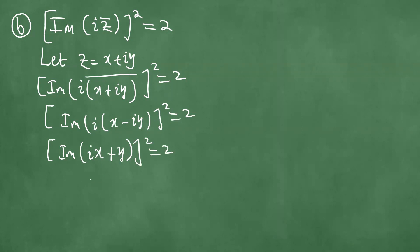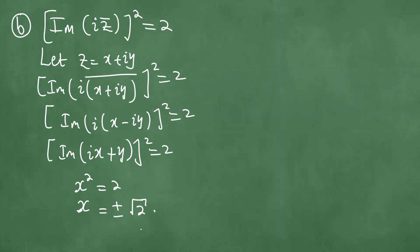We take the imaginary part of this complex number. The imaginary part is x, so x squared equals 2. Therefore x equals plus or minus the square root of 2.